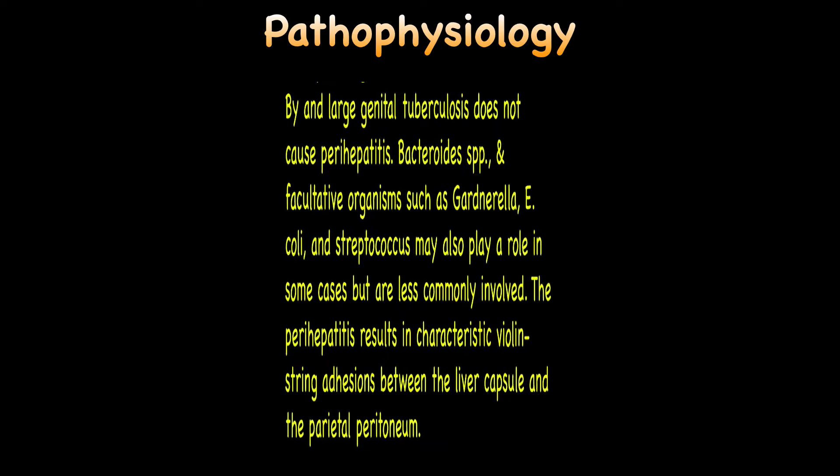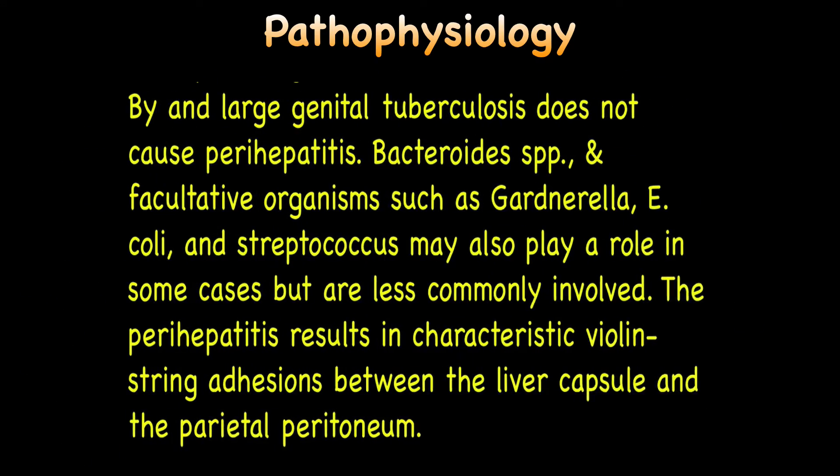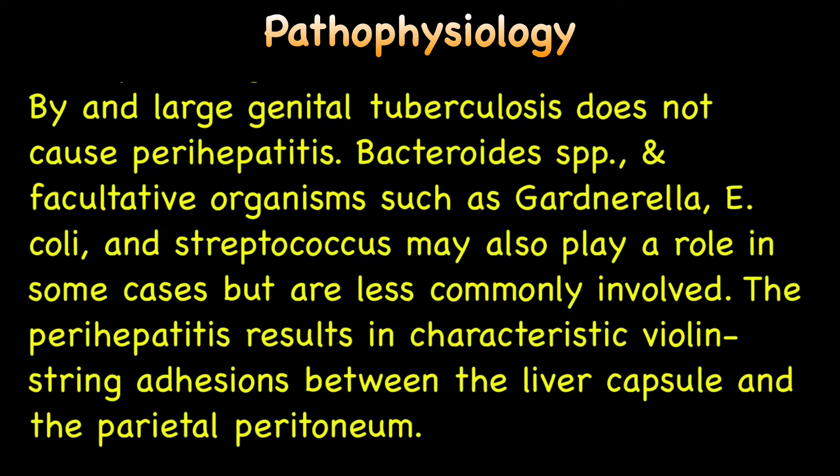By and large, genital tuberculosis does not cause perihepatitis. Bacteroids and facultative organisms such as Gardnerella, E. coli, and Streptococcus may also play a key role in some cases but are less commonly involved.